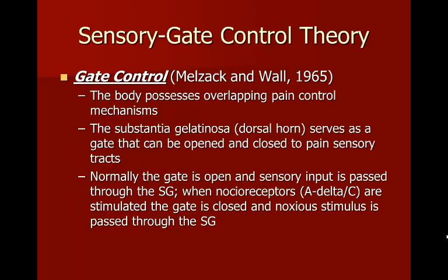Briefly reviewing the gate control theory: Melzack and Wall in 1965 proposed that the body possesses overlapping pain control mechanisms. The substantia gelatinosa in the dorsal horn serves as a gate that can be opened and closed to pain. Normally the gate is open and sensory input is passed through. When nociceptors — either the A-delta or C fibers — are stimulated, the gate is closed and the noxious stimulus is passed through.